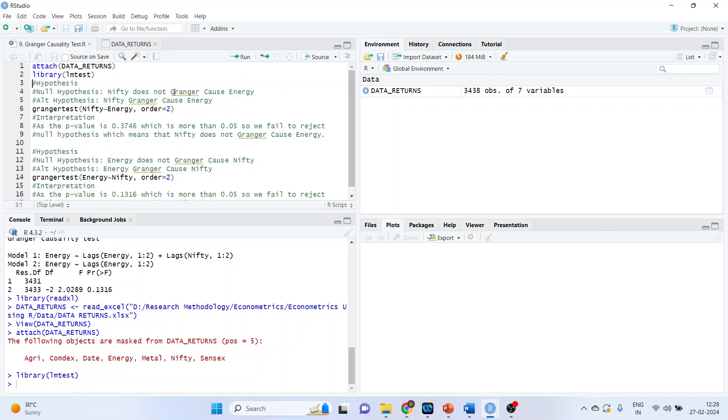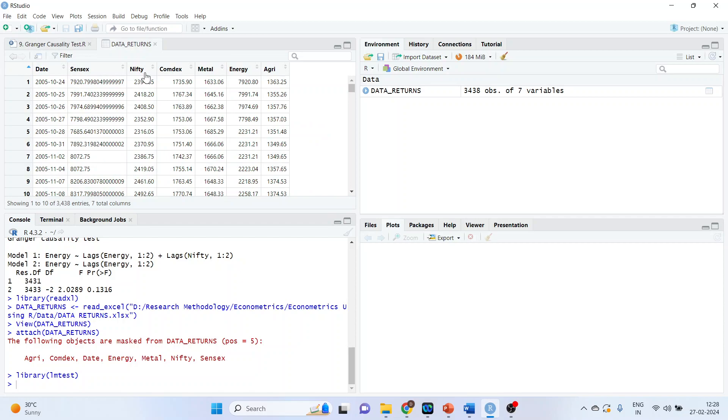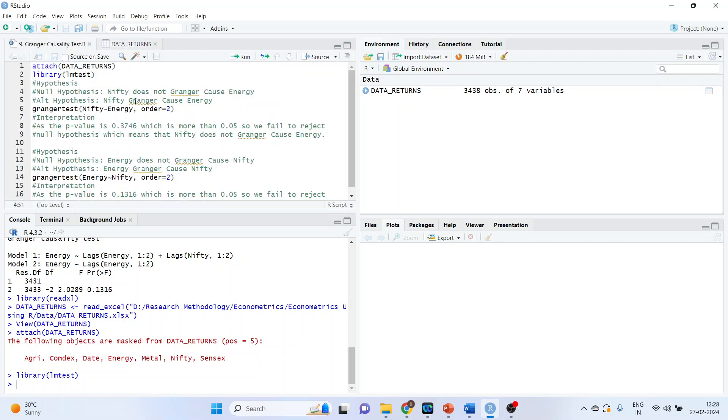Now our hypothesis is, what is our null hypothesis? Nifty does not Granger cause energy. This means, Nifty does not Granger cause energy. This and this. The alternative is, Nifty Granger cause energy. Let's run this test.